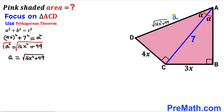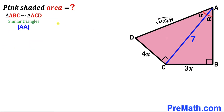Now we can see that these two right triangles ABC and ACD are similar triangles according to the angle-angle similarity theorem, since these angles are congruent, this angle is 90° and likewise this angle is 90° as well. So therefore we are going to have a proportion.